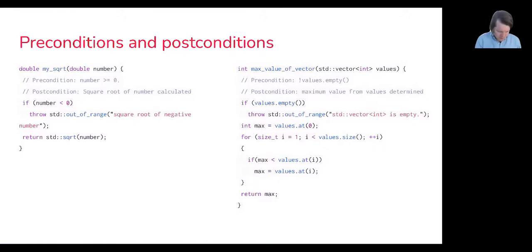First is a my_square_root function. The assumption is that this will be passed an integer value that's greater than or equal to zero. The postcondition will be that the square root of the number is calculated.